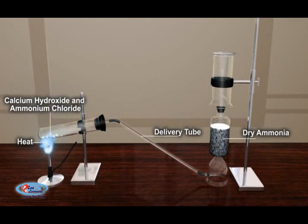Apparatus that we require: In this experiment, we require clamp, Bunsen burner, delivery tube, etc.